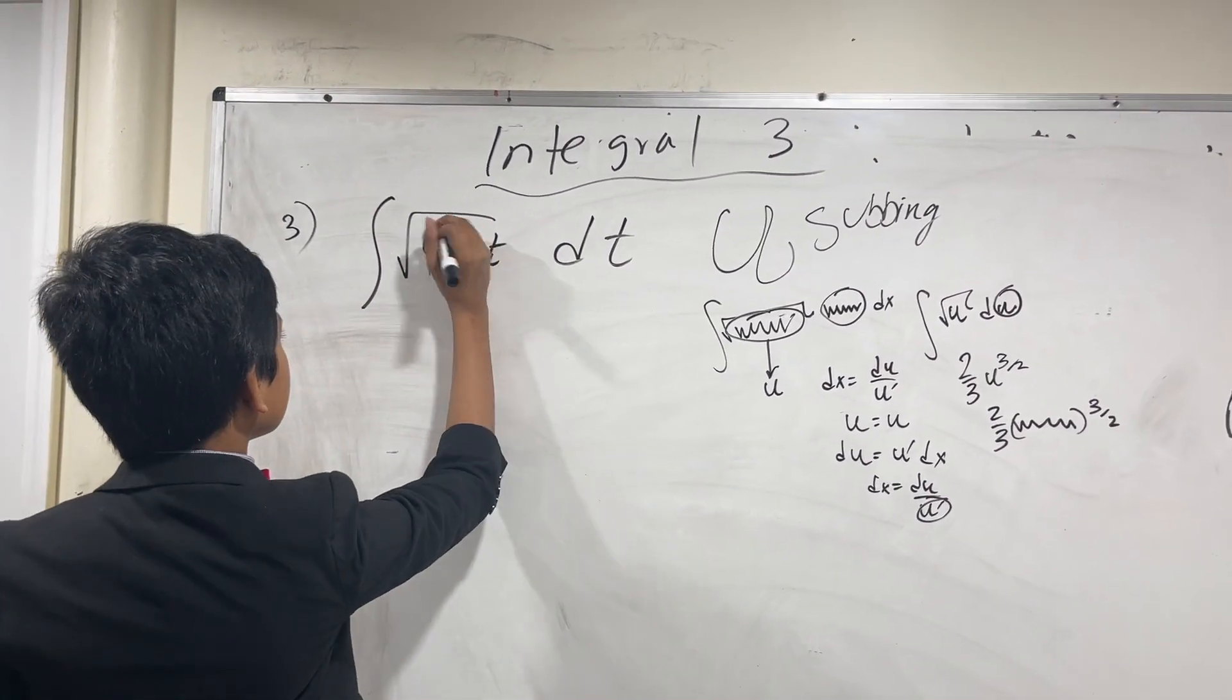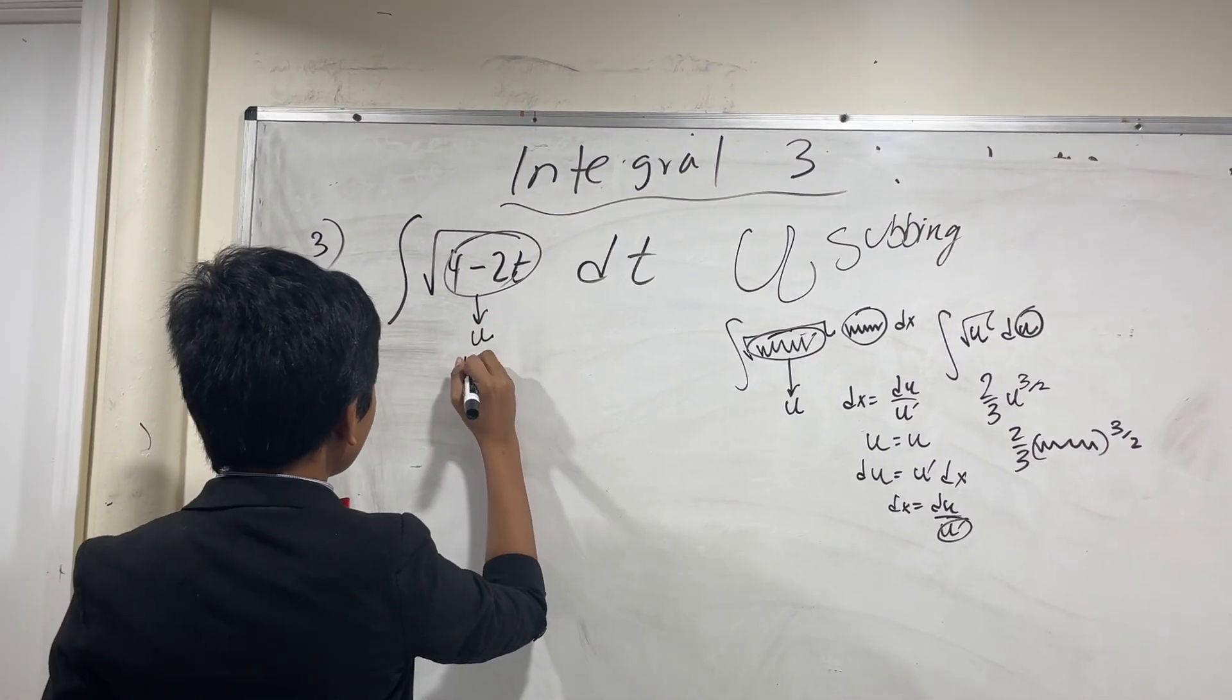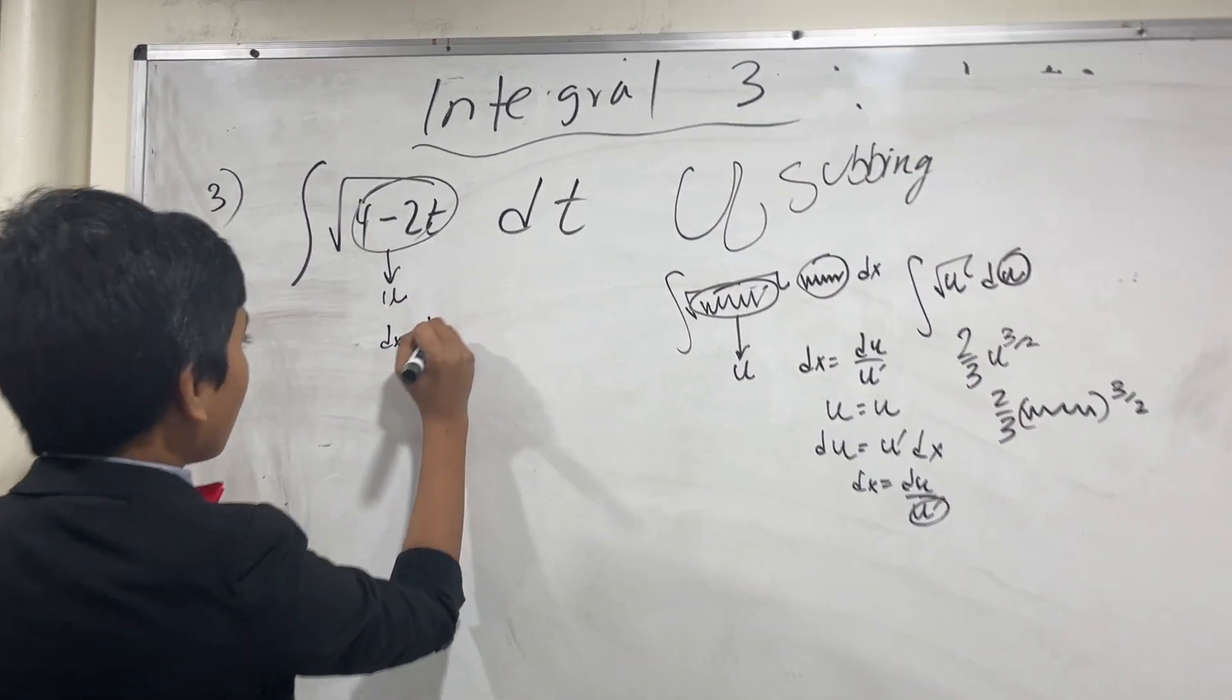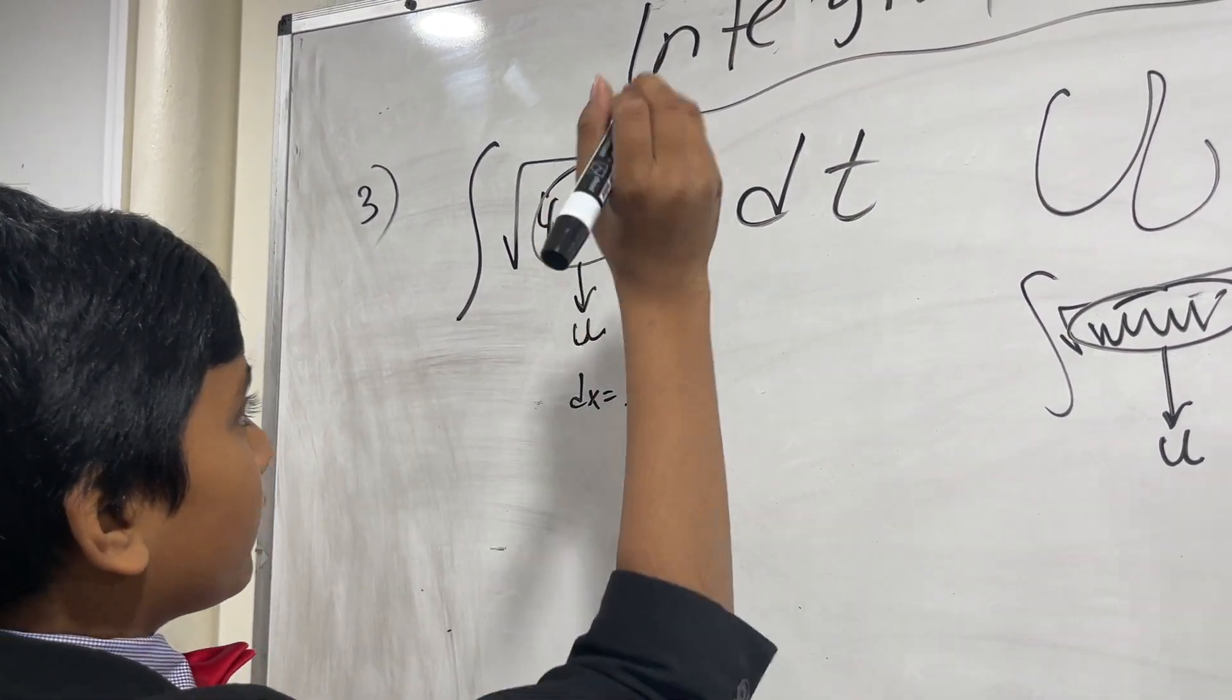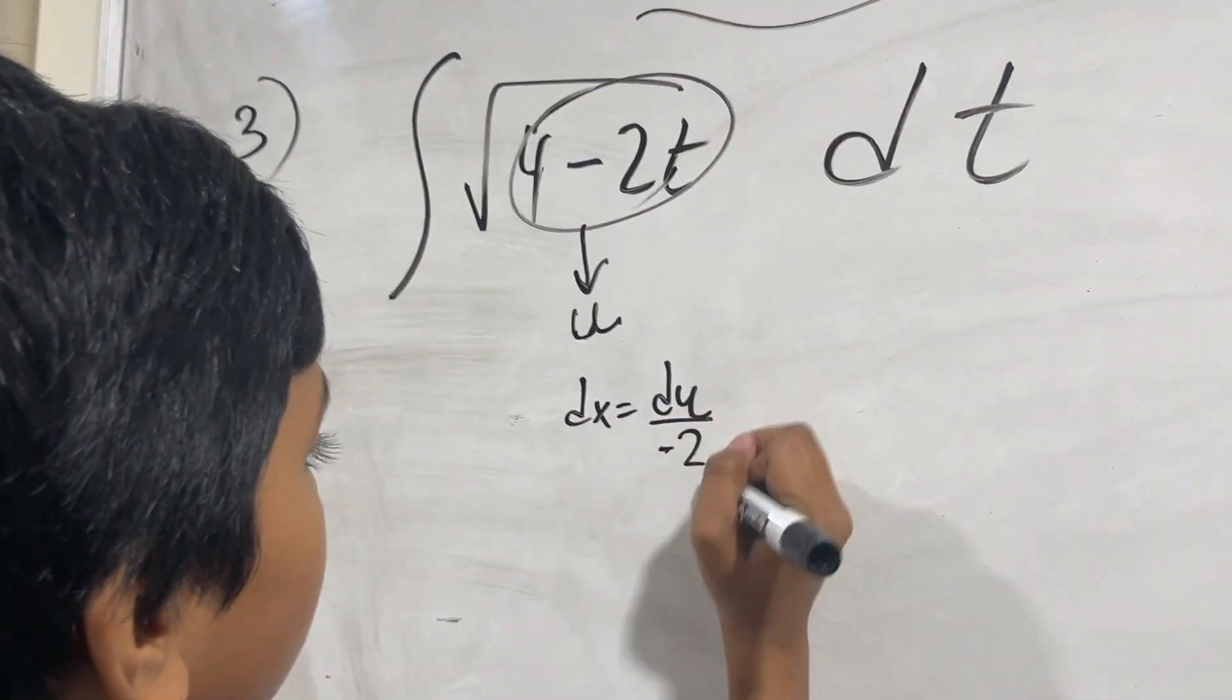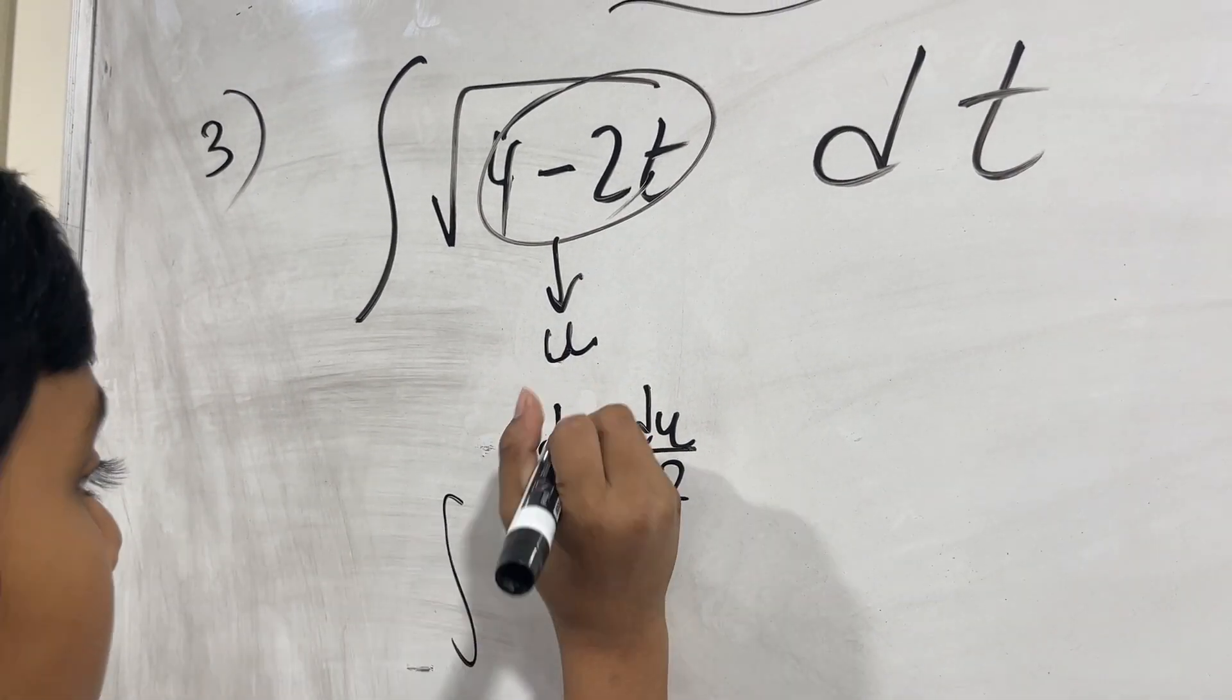So let's take all this crap in here, call it u, and then we know that du, or dx, is equal to du over u', which is gonna be—the derivative of 4 is 0 and the derivative of t is 1—so minus 2t is gonna be minus 2. So now that simply means that—oh wait, not dx, dt.